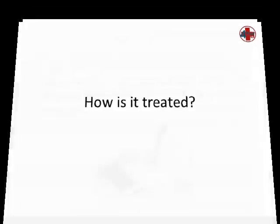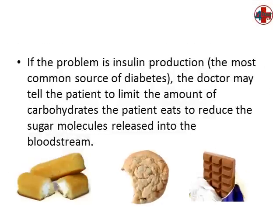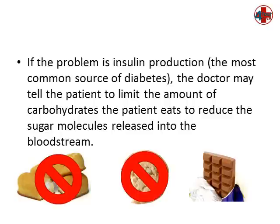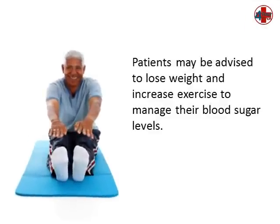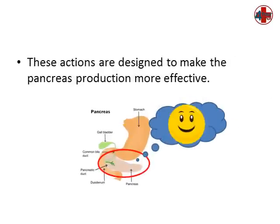How is it treated? Doctors will prescribe treatment for people with diabetes. The treatment will depend on what the doctor thinks the cause of the diabetes is. If the problem is insulin production, the most common source of diabetes, the doctor may tell the patient to limit the amount of carbohydrates the patient eats to reduce the sugar molecules released into the bloodstream. Patients may also be advised to lose weight and increase exercise to manage their blood sugar levels. These actions are designed to make the pancreas production more effective.